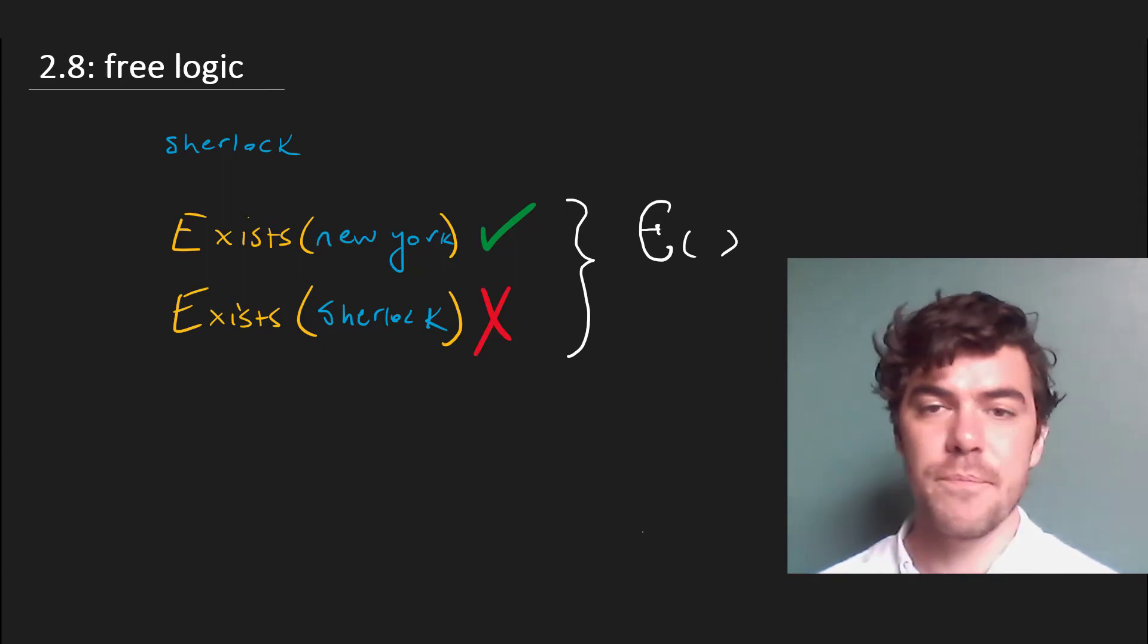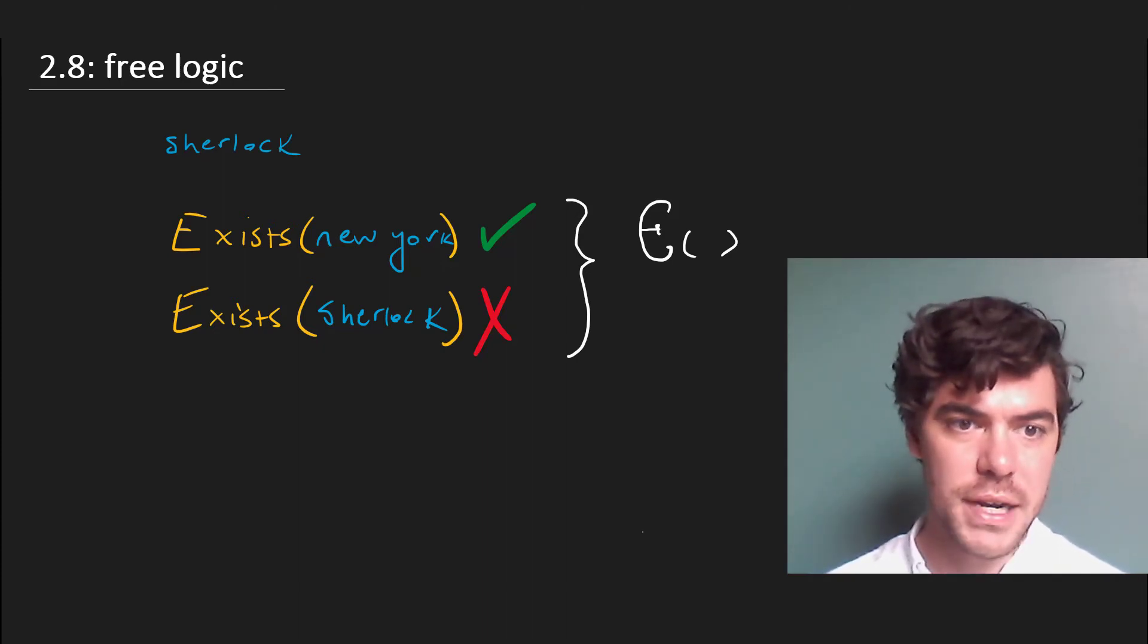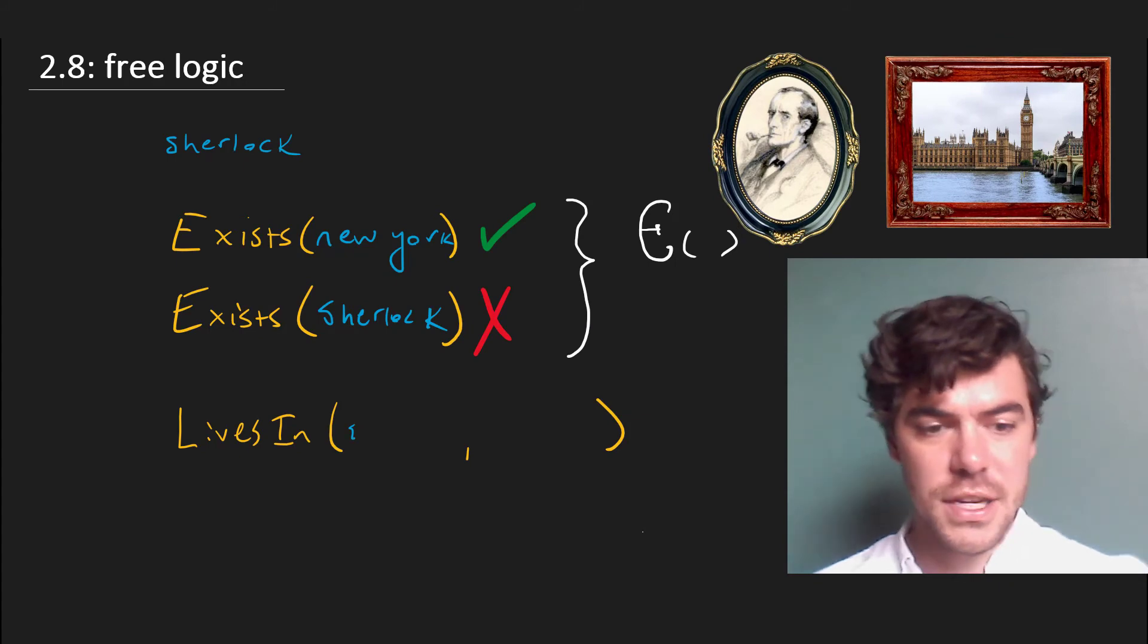That's the first point about these logics. The second is that we'll have to make a distinction between certain kinds of predicates and the truth conditions for them. For instance, lives in is true of Sherlock and London. Sherlock lives in London is a true statement.